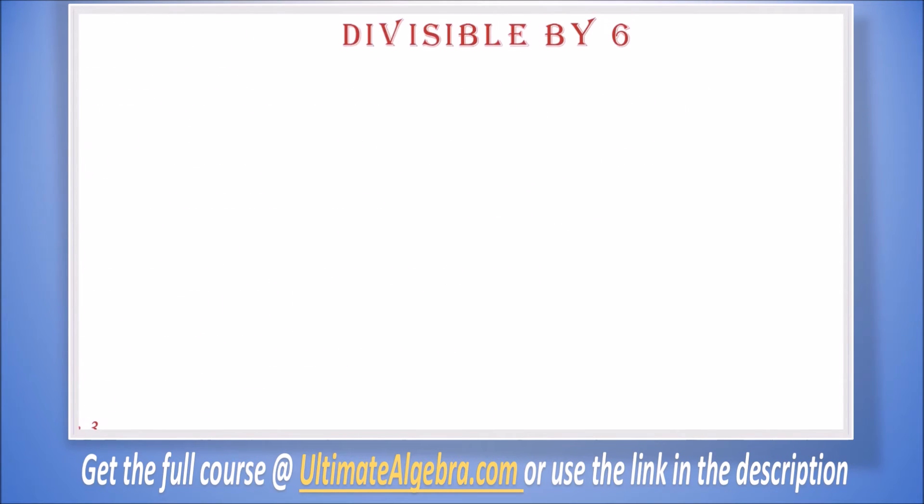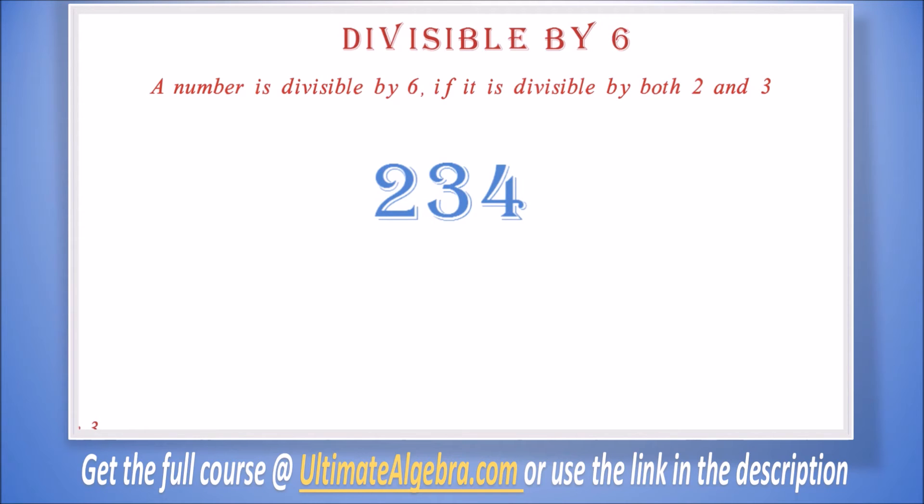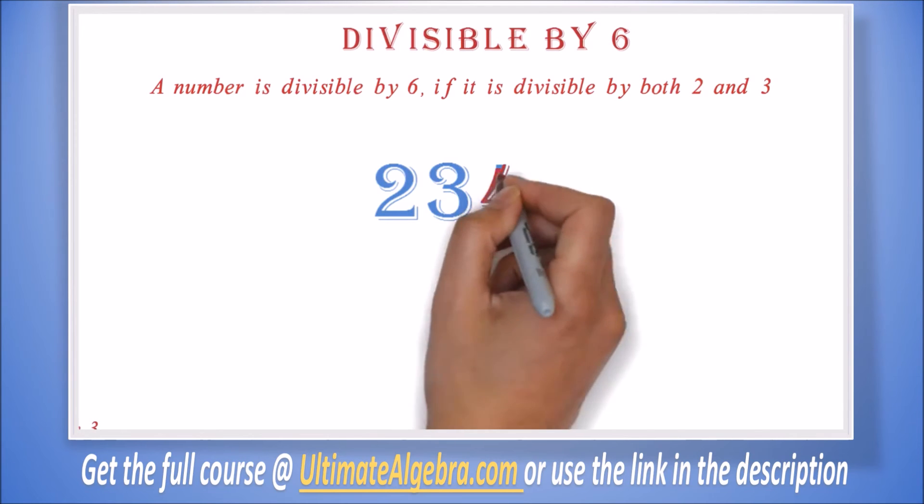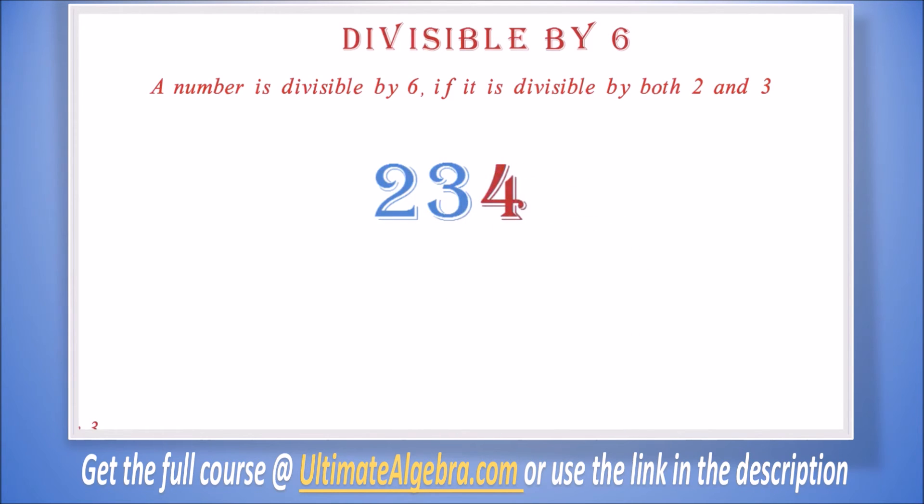Divisible by 6: A number is divisible by 6 if it is divisible by both 2 and 3. For example, let's check if 234 is divisible by 6. For this to be true we first check if it is divisible by 2. We know it is divisible by 2 because it is an even number, or because the unit value is 4. Now let's check to see if it's divisible by 3. We know it is divisible by 3 if the sum of the digits is divisible by 3. When we add 2 plus 3 plus 4 we get 9, which is divisible by 3. Now since it is divisible by both 2 and 3, we can say it is divisible by 6.